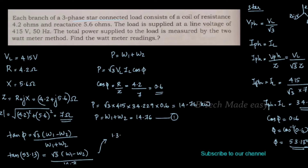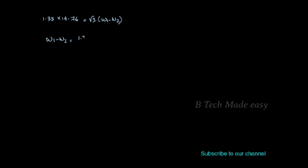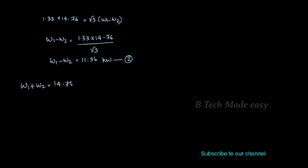So tan 53.13° equals 1.33, and √3 times (W1 minus W2) divided by 14.76 equals 1.33. Therefore √3 times (W1 minus W2) equals 1.33 times 14.76 divided by √3, giving W1 minus W2 equals 11.361 — this is equation 2.